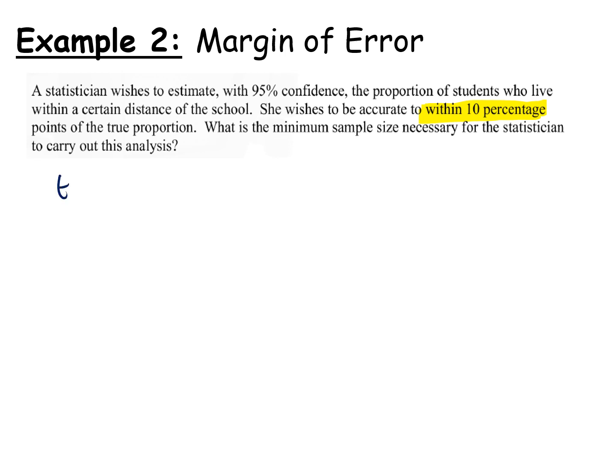So we are dealing again with E is equal to 1 over root n. However, this time what we're saying is 1 over root n must be within 10 percentage points. That must mean that it's less than or equal to 0.1. So that's within, and 10 percentage points means 10%. So what I mean by that in terms of my decimal is less than or equal to 0.1.